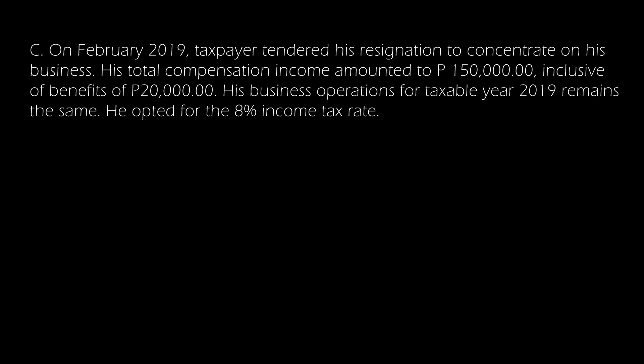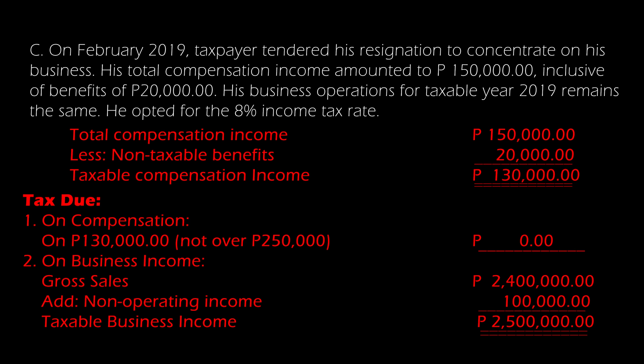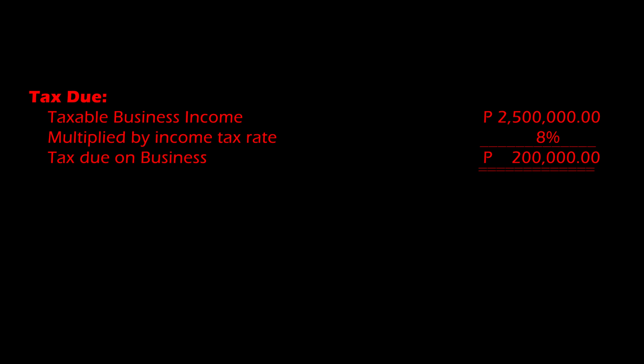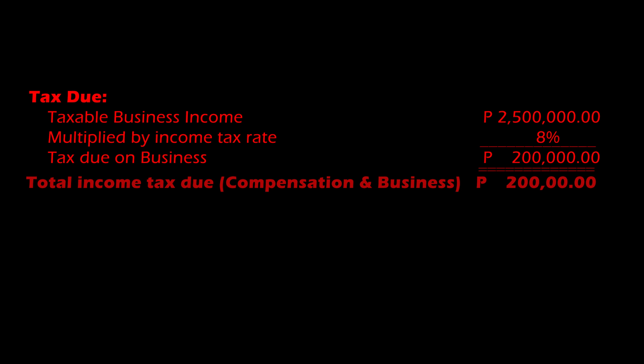In the last scenario, in February 2019 the taxpayer resigned to concentrate on his business. His total compensation income was ₱150,000, inclusive of benefits of ₱20,000, and his business operations remained the same. He opted for the 8% income tax rate. Since his compensation income does not exceed ₱250,000, there is no tax on it. For business income, taxable business income of ₱2.5 million multiplied by 8% gives a tax due on business income of ₱200,000, making the total income tax due ₱200,000.